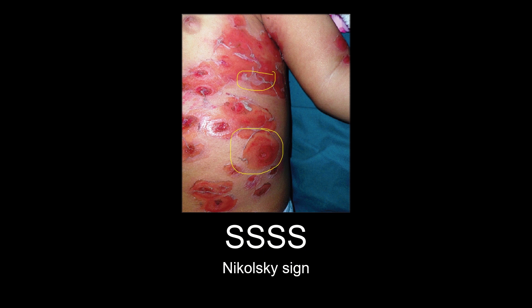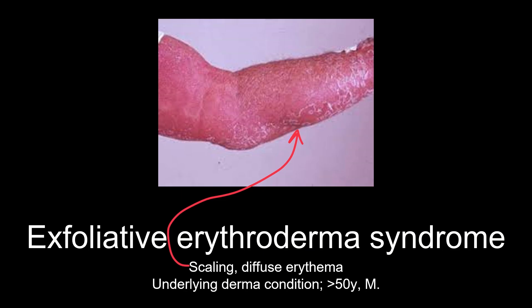In exfoliative erythroderma syndrome, you will see patients with underlying dermatological conditions like eczema, psoriasis or mycosis fungoides. Scales will be seen in between erythematous regions, as you can see here, and the patient will typically be a male over 50 years of age.